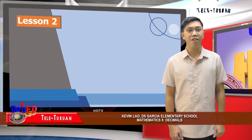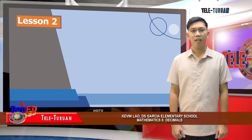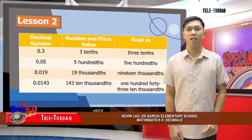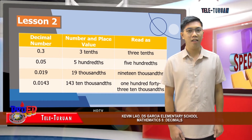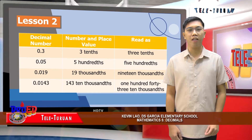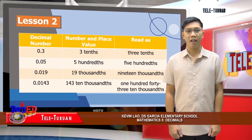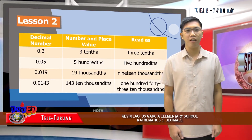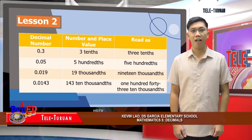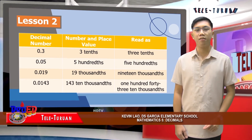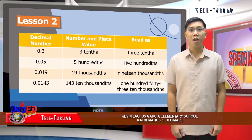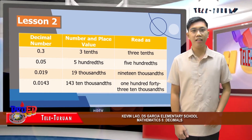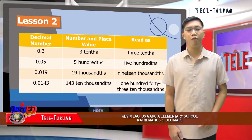Now let's proceed to reading and writing decimals. Like whole numbers, we read decimals from left to right. The digits to the left of the decimal point are read as a full number, and the decimal point is read as "and." The digits to the right of the point are also read as a full number. After which, we say the name of the place value of the last digit. For example: three tenths, five hundredths, nineteen thousandths, and one hundred forty-three ten-thousandths.